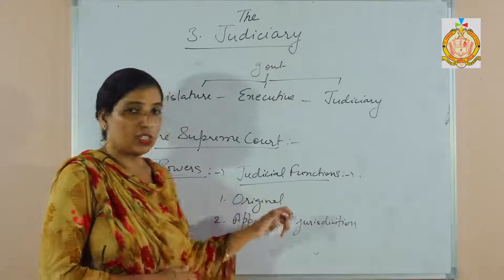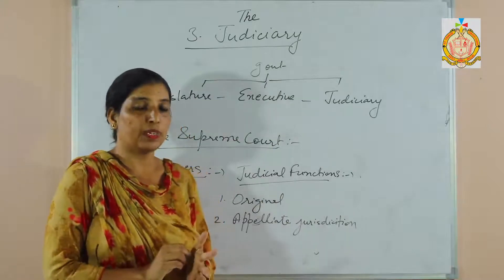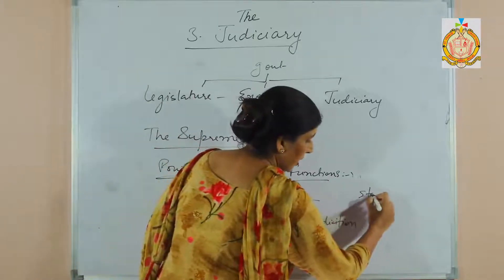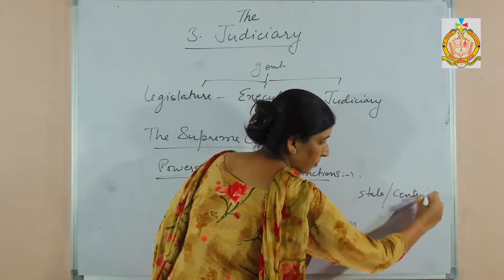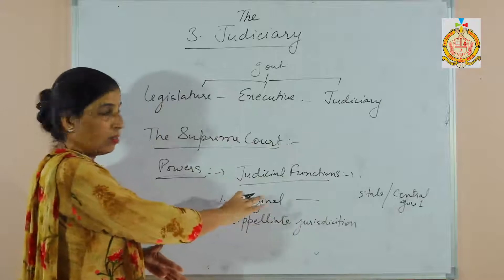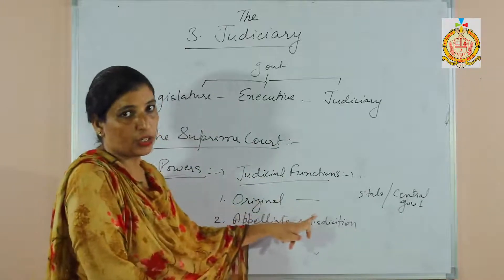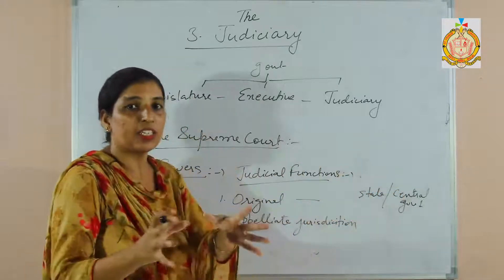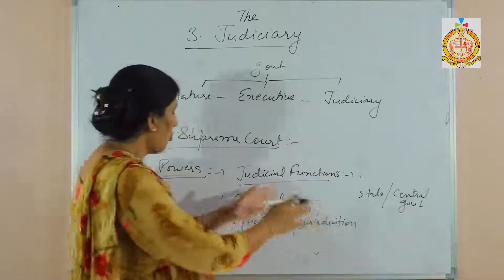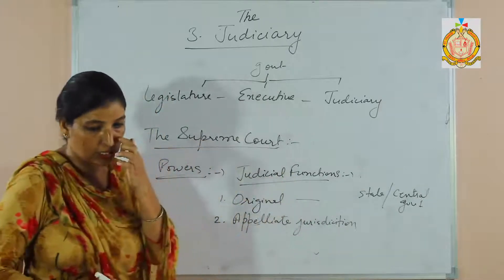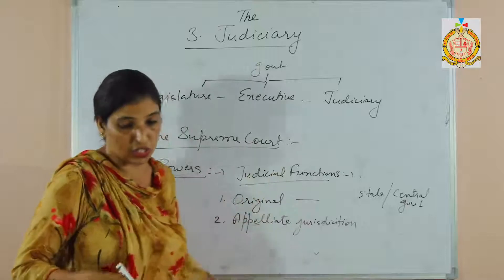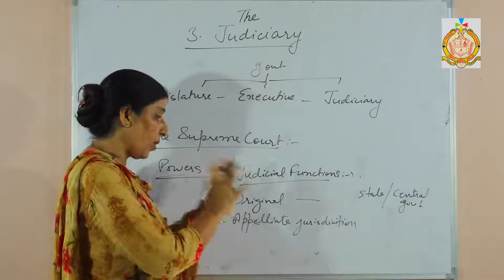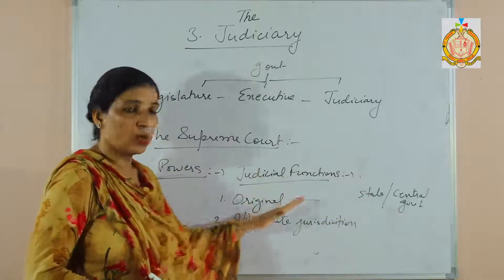Under original jurisdiction, cases such as disputes between the central government and state government are directly brought to the Supreme Court. The Supreme Court has the authority to hear such cases at the first instance — meaning by priority, these types of cases are handled by the Supreme Court under original jurisdiction.